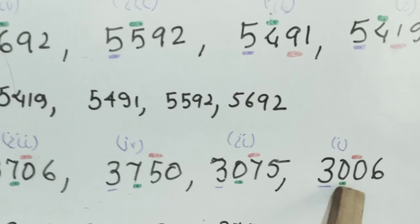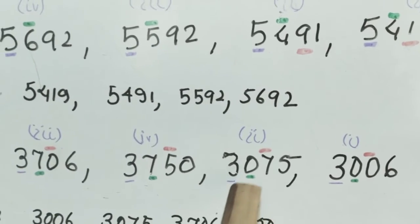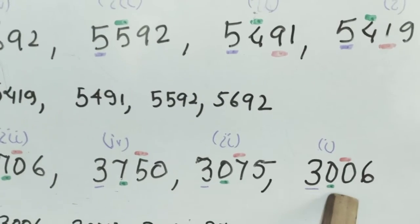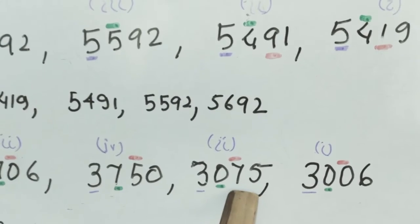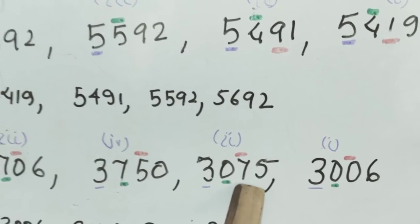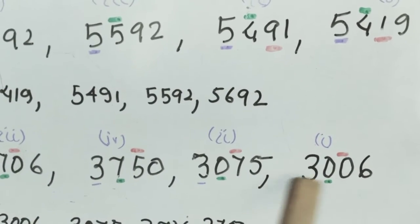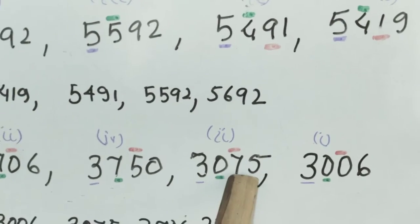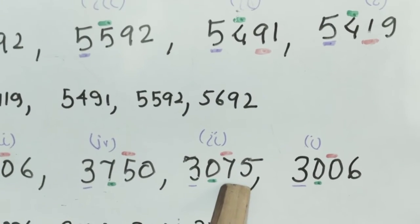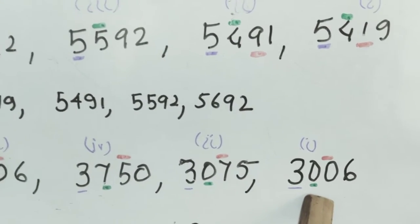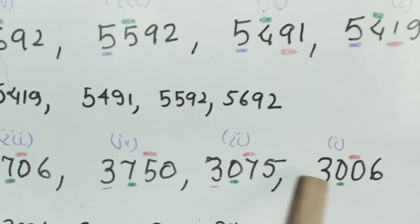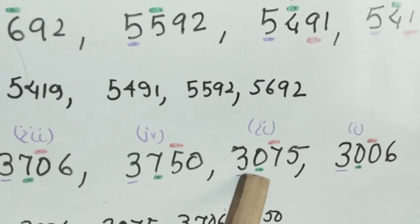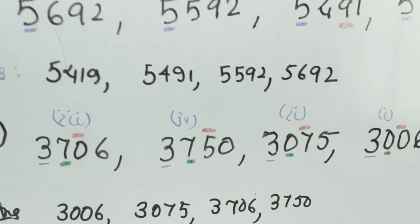Now, between these two numbers, the 100 place is the same. So we are comparing the numbers at the 10th place. Here it is 7, here it is 0. And 7 is greater than 0. So this one is the smallest number, and I am putting it at the first place. And this comes at second place.